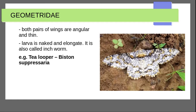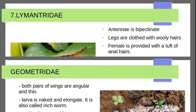Geometridae — larva is naked and elongate; they are also called inchworms or loopers. The larva moves in a looping and angular manner. They are also called T-loopers or span worms.